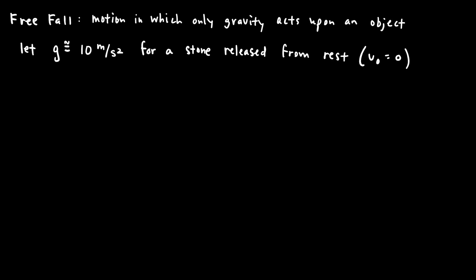Let's think about what this object is doing as it falls. The acceleration due to gravity pulls down, causing the object to speed up in the downward direction. Every second the object will have traveled more and more distance. If I took a picture of the object every second, the spacing between snapshots should be increasing. Let's say the object starts at t = 0, then t = 1, t = 2, and t = 3 seconds.